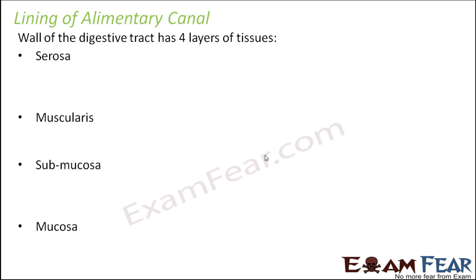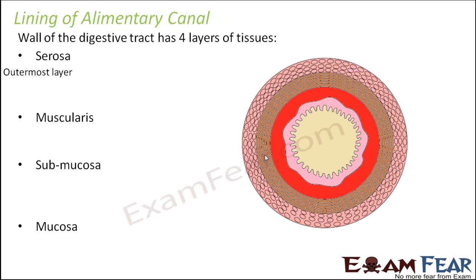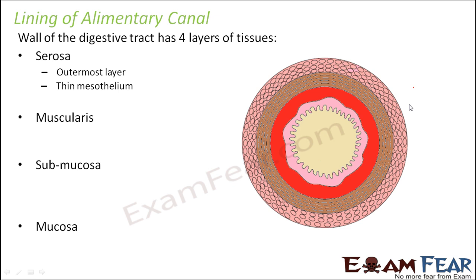The first layer is serosa, which is the outermost layer. It is nothing but a thin mesothelium — the layer which surrounds the intestine. From outside, whatever layer you see, that is nothing but the serosa.